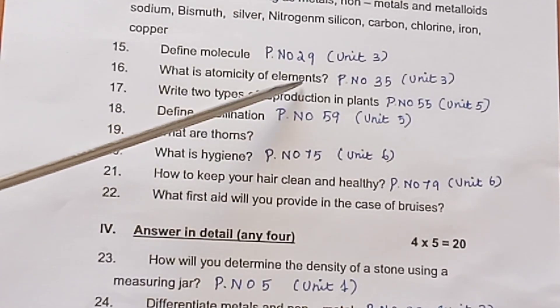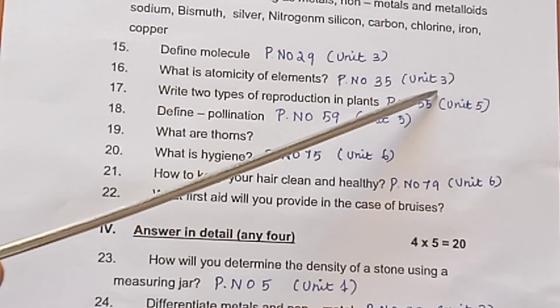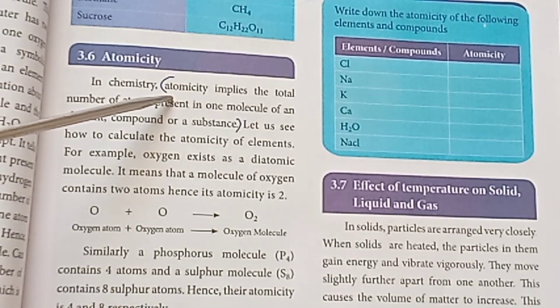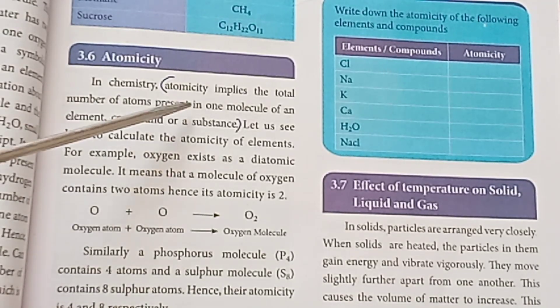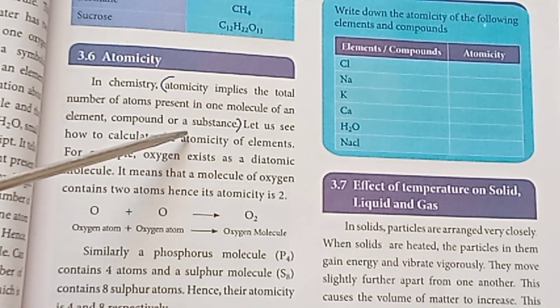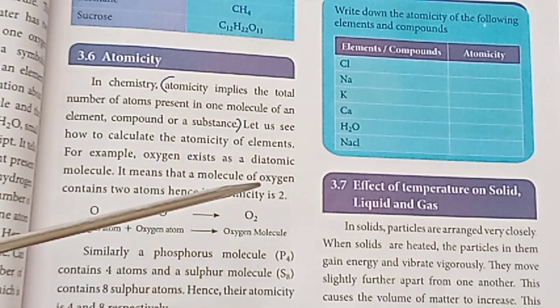Question 16: What is atomicity of an element? Page number 35, Unit 3. Answer: Atomicity is the number of atoms present in a molecule of a substance.